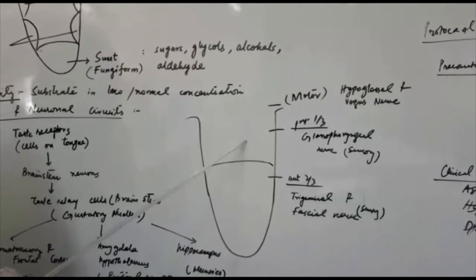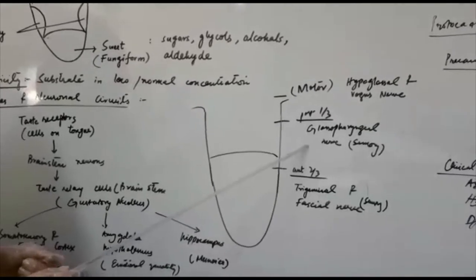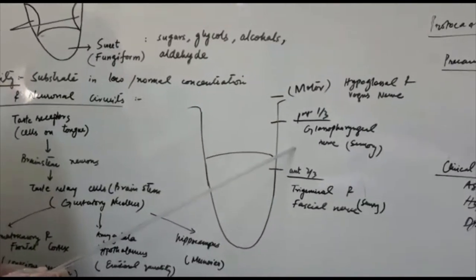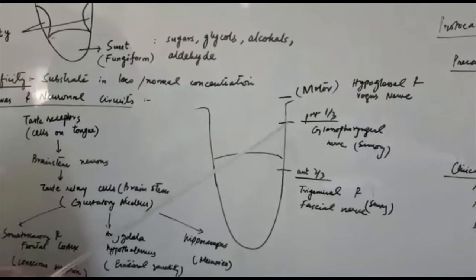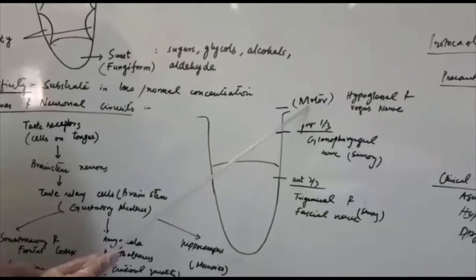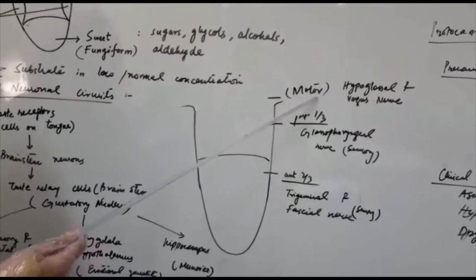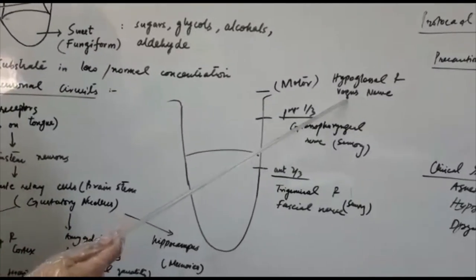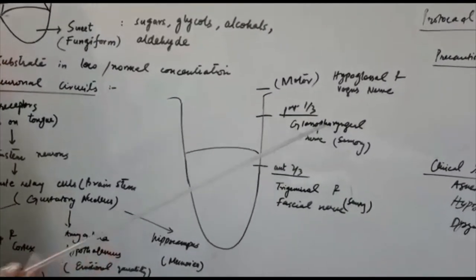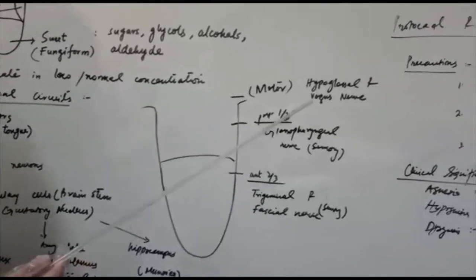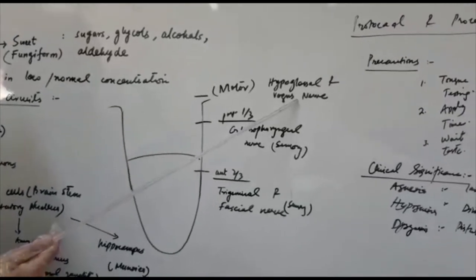Whereas in the posterior one-third part, glossopharyngeal nerve is responsible for taste sensation. When we discuss the motor part of the taste sensation, it is usually conveyed by hypoglossal nerve, except the palatoglossal part of the tongue which is supplied by the vagus nerve.